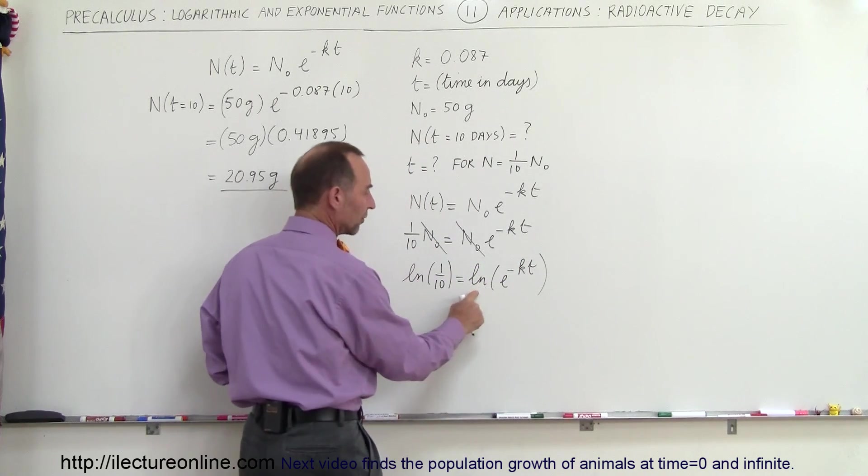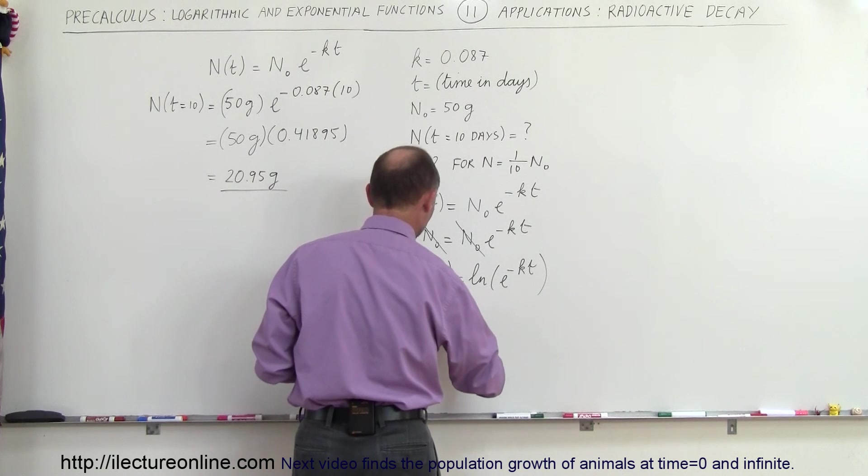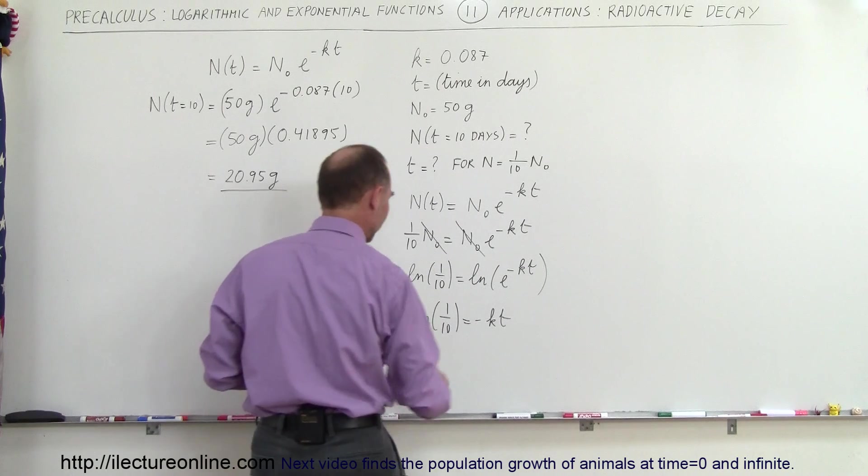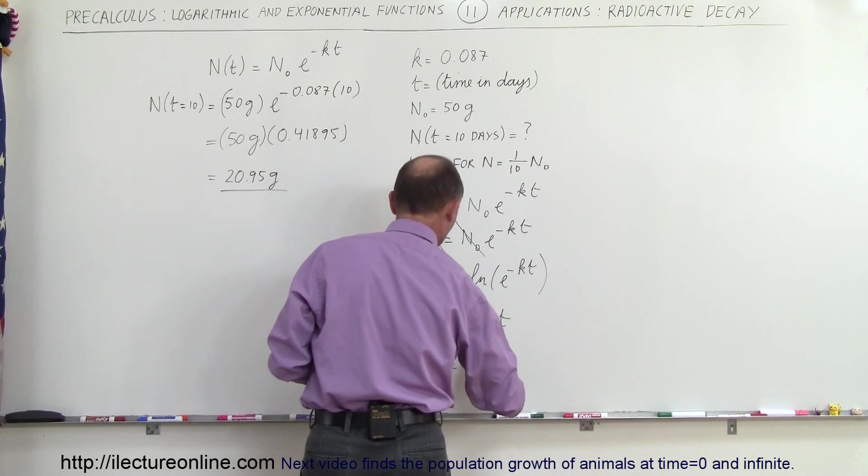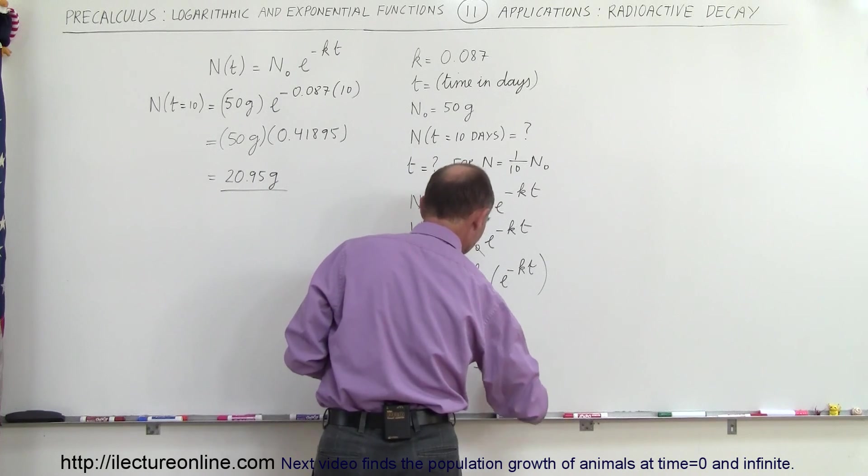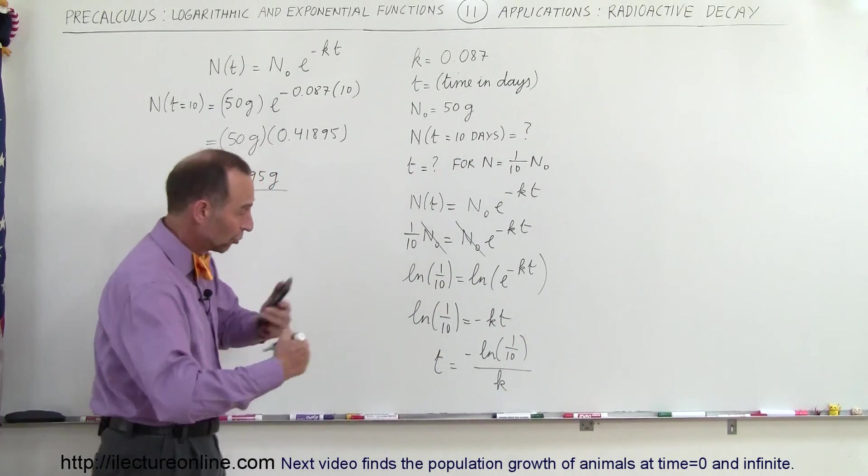And of course when you take the natural log of an exponential function they cancel out, so you end up with the natural log of one tenth is equal to minus k times T. And finally solving that for T, we have T is equal to the negative of the natural log of 1 over 10, divided by k, because you'll divide both sides by negative k, and then you turn the equation around.